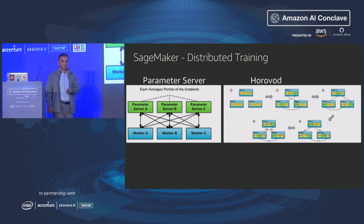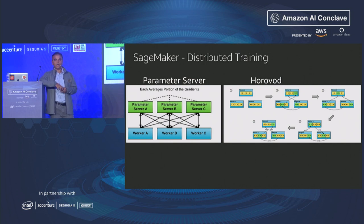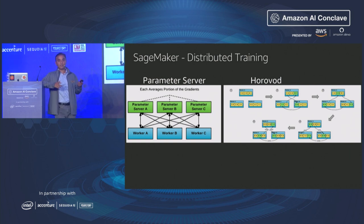For distributed training, there are two modes. The first is the parameter server, where a parameter server attached to every worker takes gradients, aggregates them, and redistributes — an asynchronous distribution approach. The second is Horovod, developed by Uber and now open source, which uses a message passing interface (MPI) — a popular standard for distributing traffic across multiple nodes in a cluster. We support both, but Horovod gives you a significant bump for distributed training. The 256-instance training experiment and the Mask R-CNN benchmarks both use Horovod.